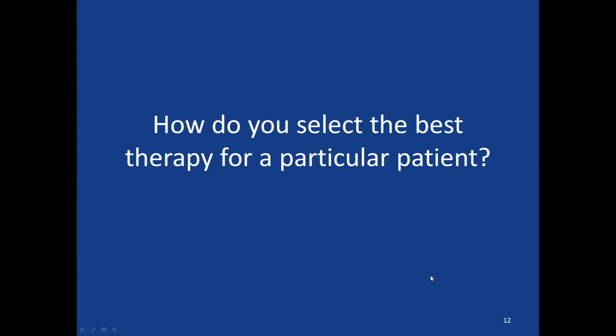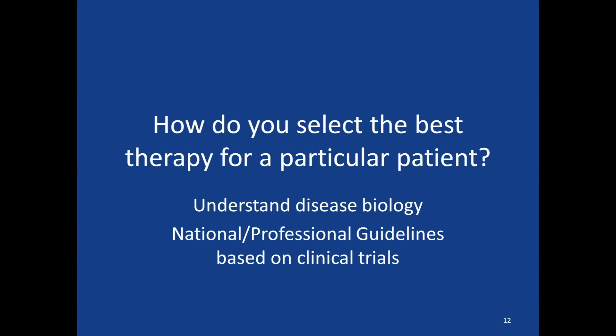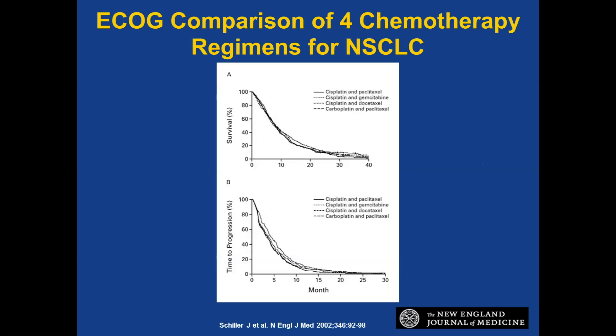How do you select the best therapy for a particular patient? In oncology, we have a lot of work done by our predecessors, and we have national professional guidelines based on prior clinical trials. If you're seeing a patient with metastatic breast cancer versus metastatic bladder cancer, there are well-published guidelines that establish the standard of care based on those prior clinical trials.